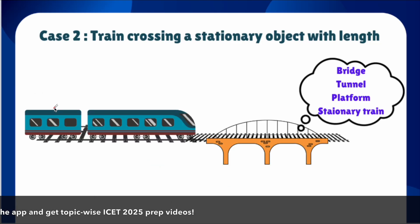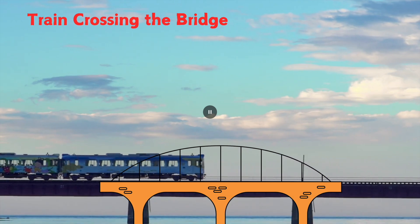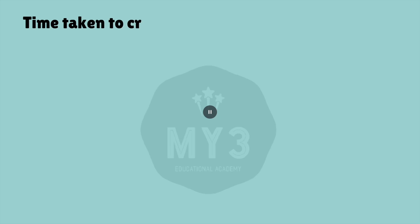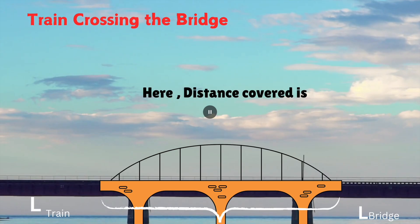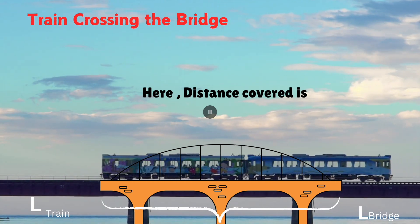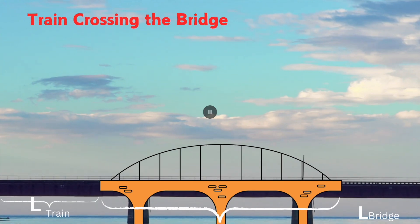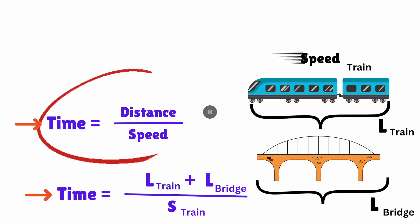Case two: train crossing an object which has some length, such as a bridge. Time is given by distance divided by speed. The train crossing a bridge covers its own length plus the bridge's length. So total distance = length of train plus length of bridge. Time taken equals (length of train + length of bridge) divided by speed of train.